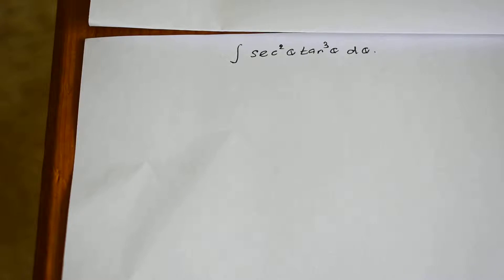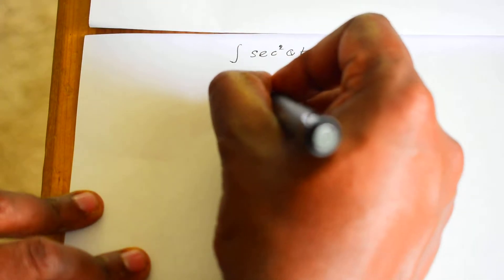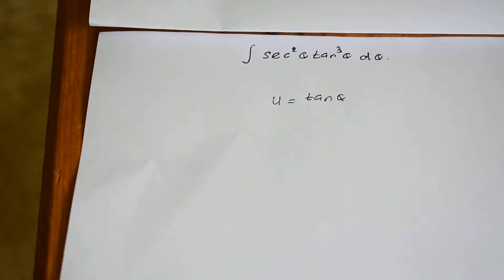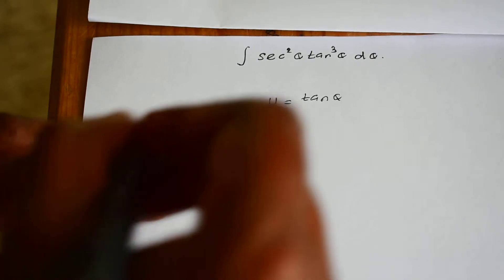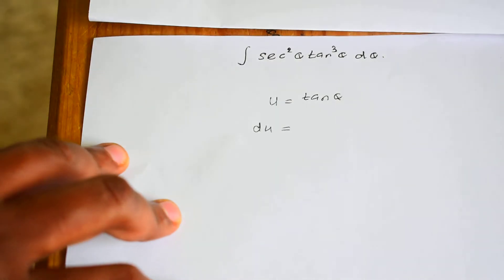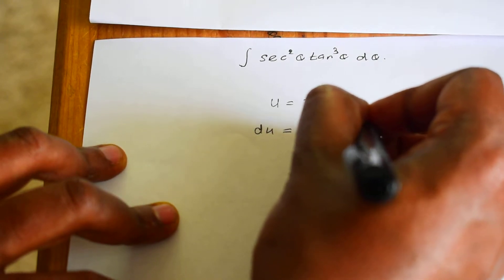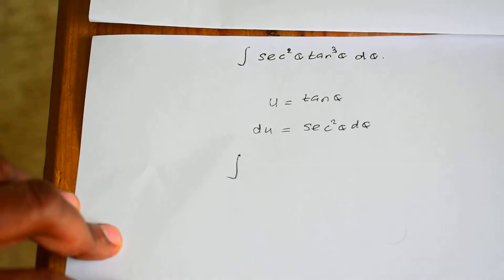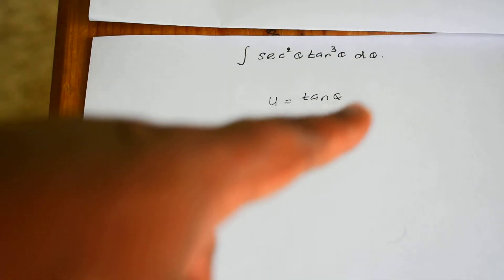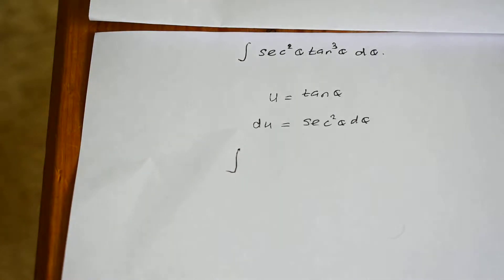The most appropriate u-substitution should be treating u equal to tangent theta. Because if you write u as tangent theta, you will see that the secant squared theta term can be written as the derivative of tangent theta, since the derivative of tangent theta is equal to secant squared theta. So you can write du equal to secant squared theta times d theta.